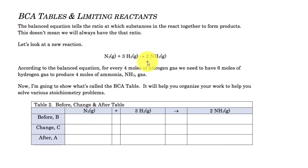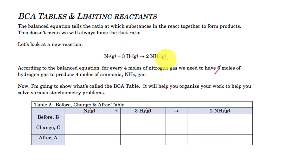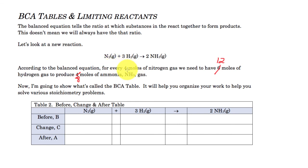Let's look at a comparison with a small mistake to correct. According to the balanced equation, for every four moles of nitrogen we don't need six moles of hydrogen — that's not right. For every one mole of N₂ we need three moles of H₂, so four times three gives twelve moles of hydrogen. And for four moles of nitrogen, we produce eight moles of ammonia, not four.